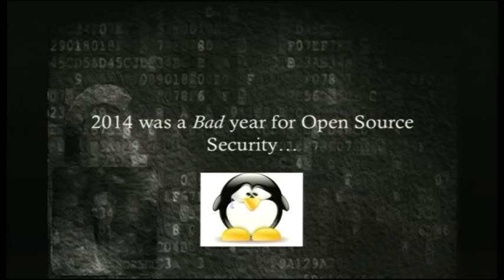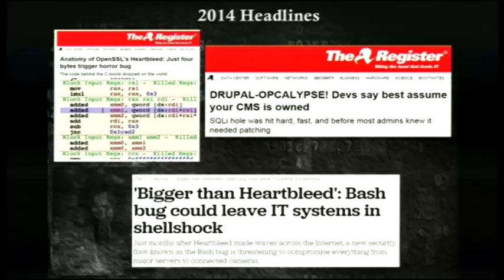Let's face it, it's been a bad year for security and open source. I'm not here to pick on any particular projects or point a finger. Here are a couple of headlines we're all aware of from this past year: the OpenSSL Heartbleed vulnerability, some problems found in Drupal with SQL injection, and of course the Bash Shellshock vulnerability. We really can't shake our finger at closed source giants like Microsoft without pointing it at ourselves and asking what we can do better in terms of improving the security of what we're putting out there.